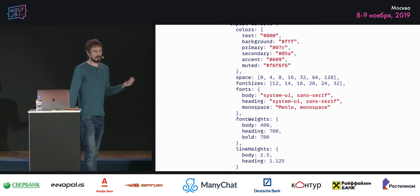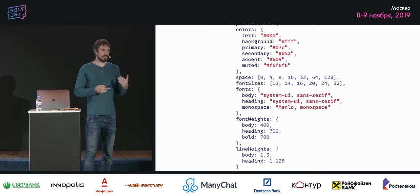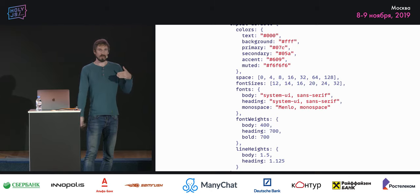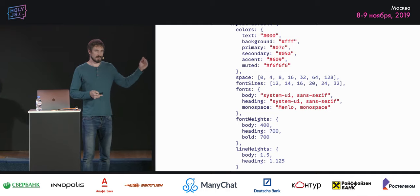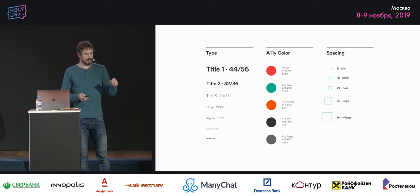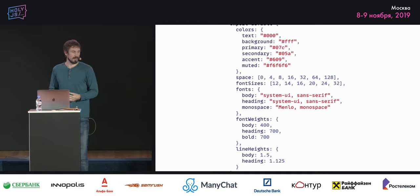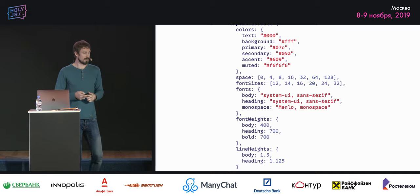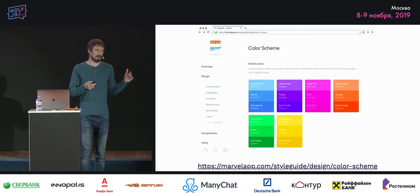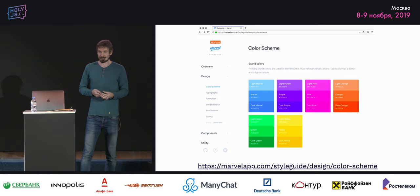One way of documenting design tokens in code is just an object — export default — that contains all the definitions we need. For colors we have text, background, primary, accent, muted. We do the same for spacing — a scale like 0, 4, 8, 16, 24. For font sizes we have a different scale. The cool thing about having this object or JSON format is that we can generate beautiful style guides automatically.